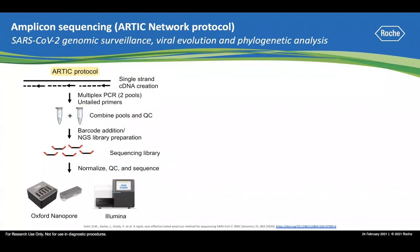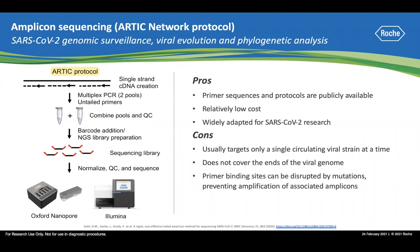After multiplex PCR, the amplicons are combined for library construction. At this stage, library preparation kits from several commercial vendors can be used. The pros of this workflow are that primers and protocols are publicly available, it is relatively low cost with faster turnaround time, and it has been widely adopted for SARS-CoV-2 sequencing. The cons are that it usually targets only a single circulating viral strain, does not cover the ends of the viral genome, and primer binding site mutations can disrupt amplification, causing amplicon dropout or uneven coverage.